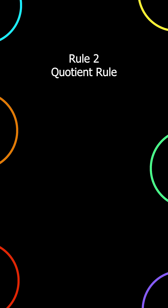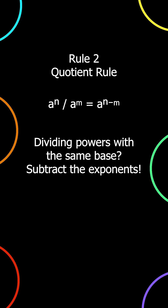Rule 2: Quotient rule. a to the power of n divided by a to the power of m is equal to a to the power of n minus m. Dividing powers with the same base? Subtract the exponents. Example: 5 to the power of 7 divided by 5 to the power of 4 is equal to 5 to the power of 3.